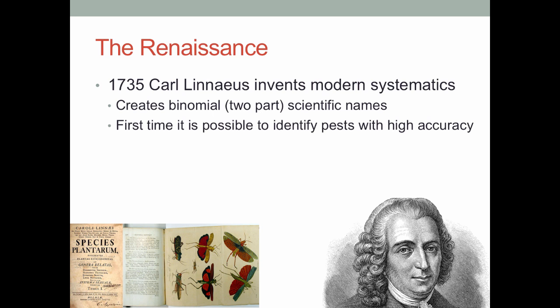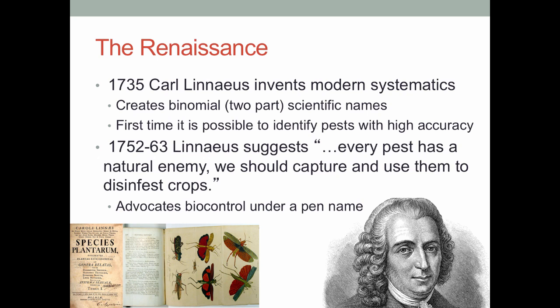The other thing Linnaeus did — he did this under a pen name, never in his own books — was through his research he came to the conclusion that, quote, 'every pest has a natural enemy and that we should capture and use these to disinfest crops.' So he was one of the early people really advocating for biocontrol in Europe, and he was kind of ahead of the times on that as well.